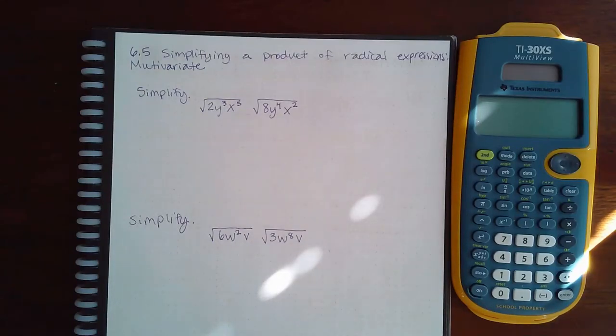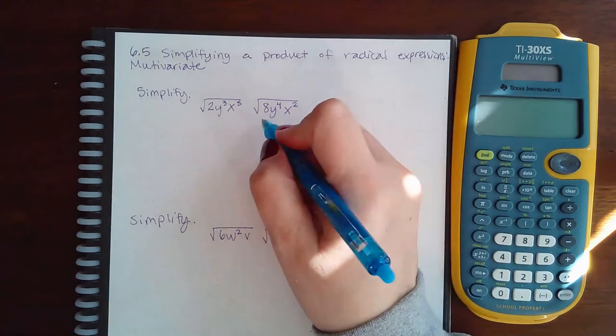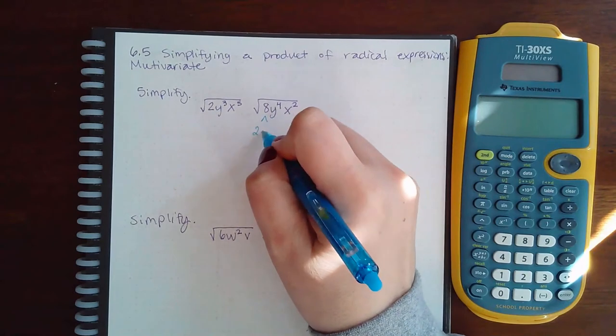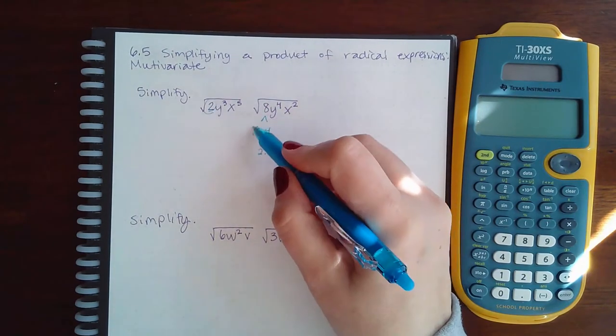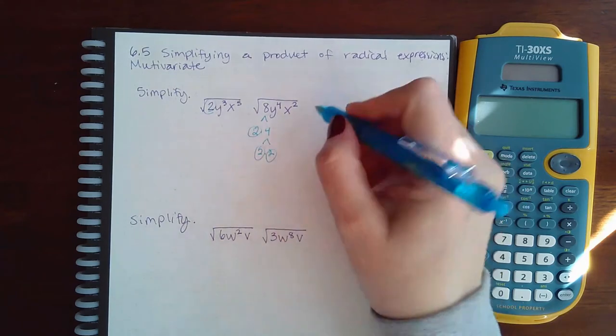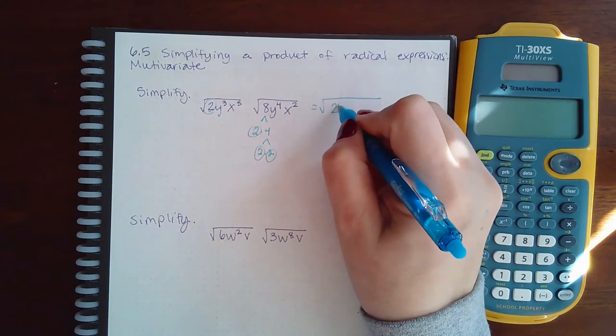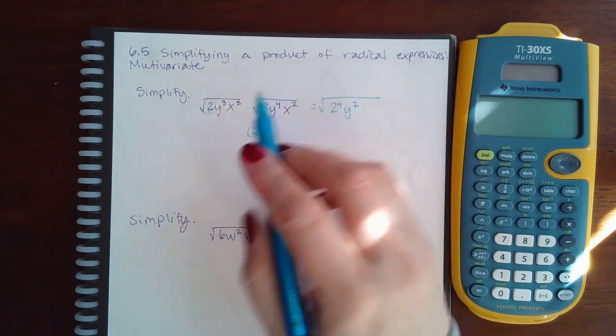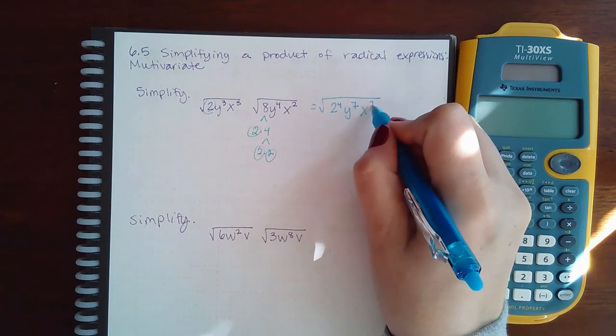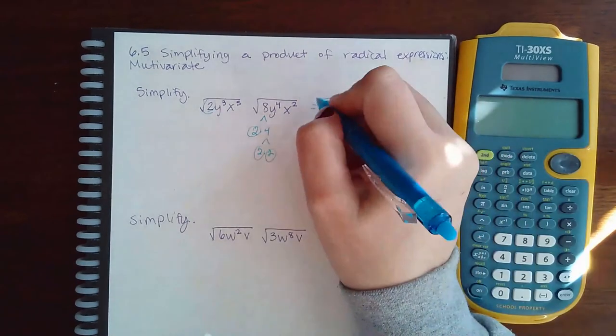Here we have 6.5 simplifying a product of radical expressions multivariant. I'm going to write this number as its prime factorization. I have this 2 here one two three four, so it'll be 2 to the fourth. The y's will become y to the seventh and the x's will become x to the seventh.